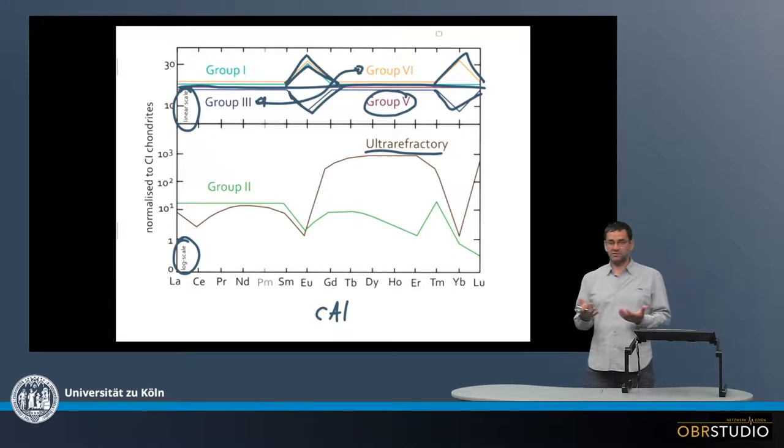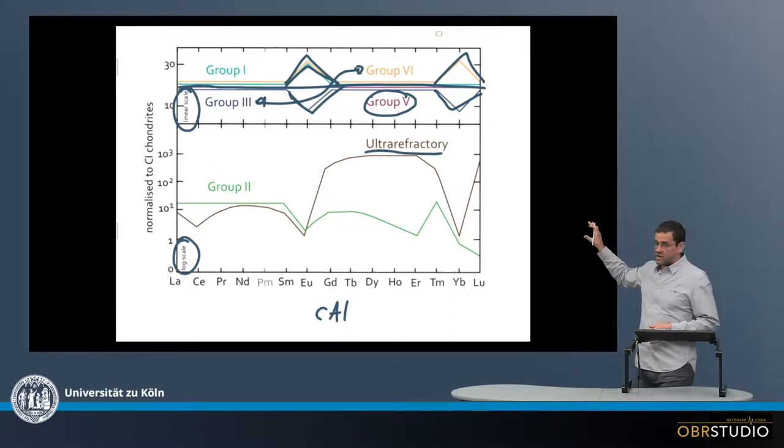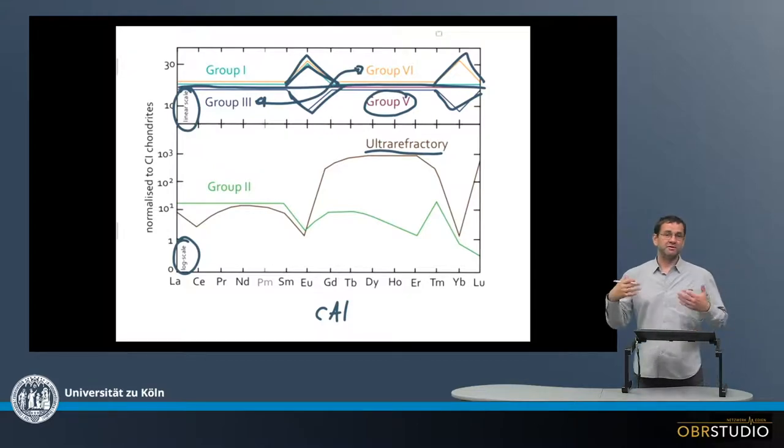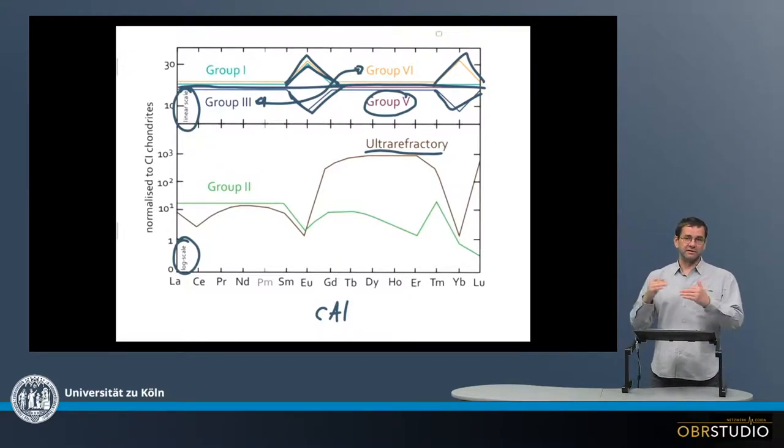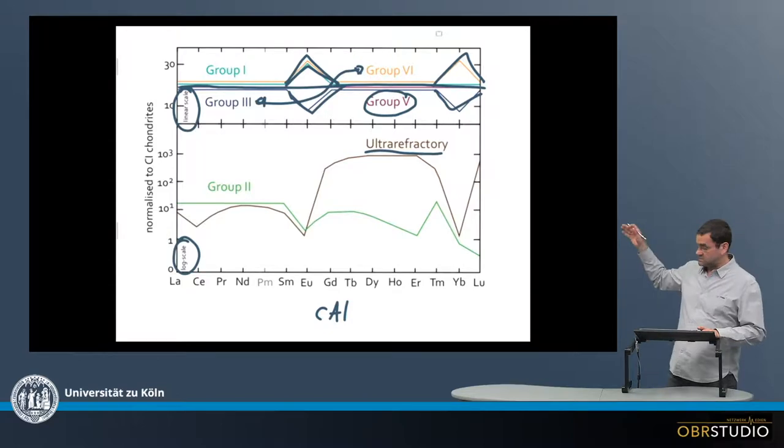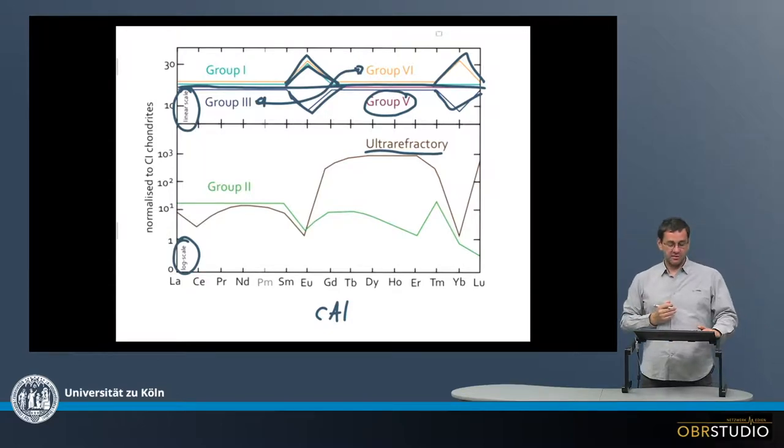Now europium and ytterbium are the most volatile rare earth elements, and this is how these patterns are explained. Because of the volatility, they did not condense together with the other rare earth elements, and therefore some gained more of the volatiles, whereas others lost some of the volatiles. This is how the complementary patterns were produced.